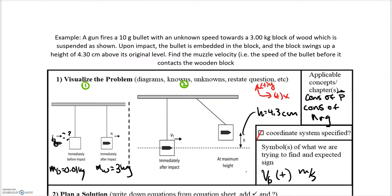Now that we've outlined the steps, we can implement them. The first part is a conservation of momentum problem. The initial velocity of the bullet is unknown — that's what we're ultimately looking for. The mass of the bullet is 0.01 kilograms and the mass of the block of wood is 3 kilograms. The bullet embeds itself in the block after the collision.